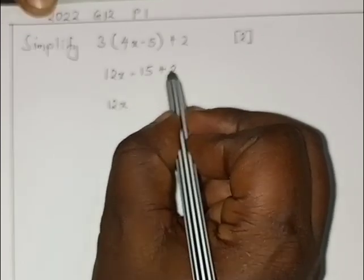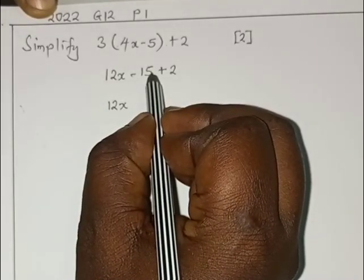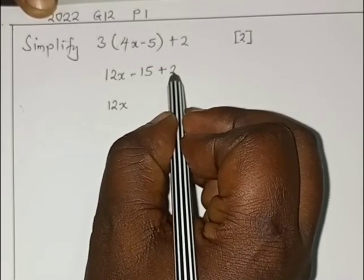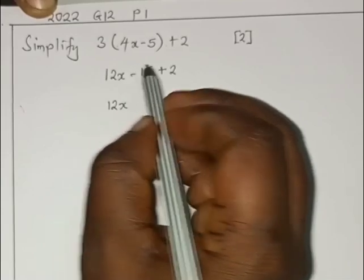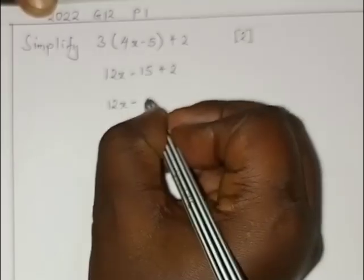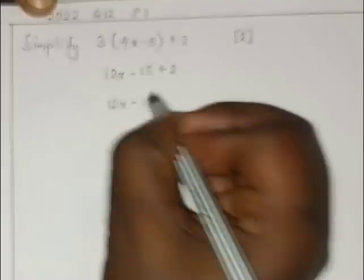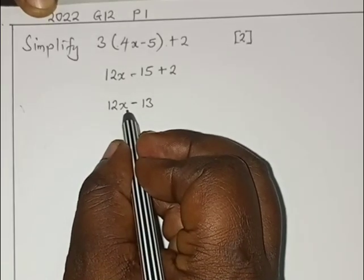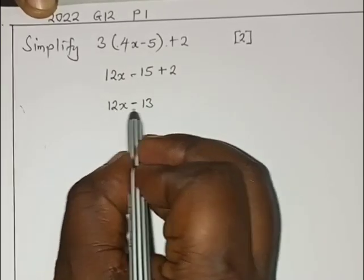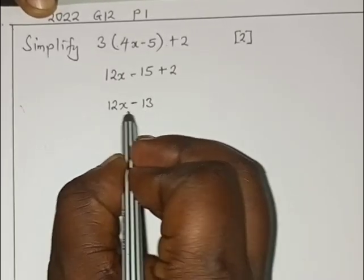This is the same as saying 15 minus 2, that will give us 13. Get the sign from the bigger number, 15 is bigger than 2, so the sign will be negative. So here we have negative 13.